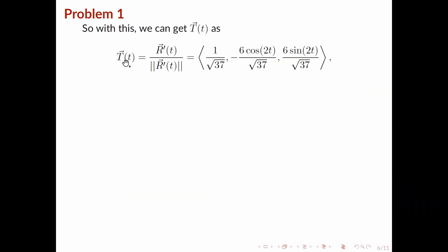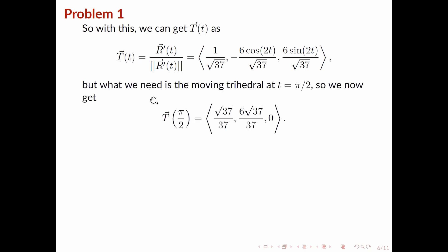We can now solve for the unit tangent vector — you can verify that you get this vector. Since we need the moving trihedral at t equals pi over 2, we don't need the tangent vector for all times t; we only need to substitute in pi over 2, and we get this result.